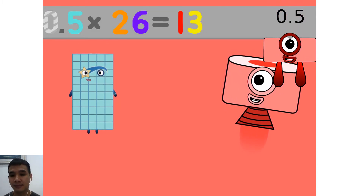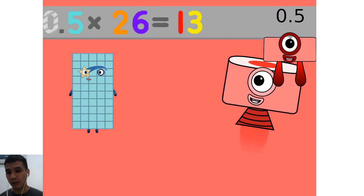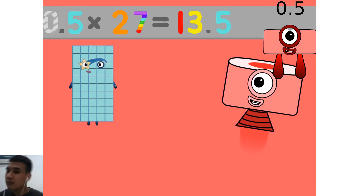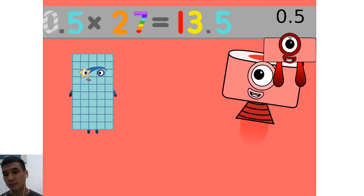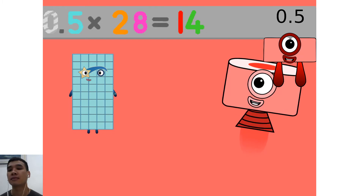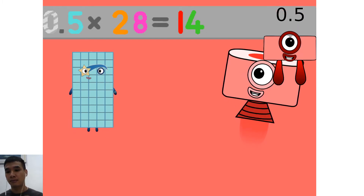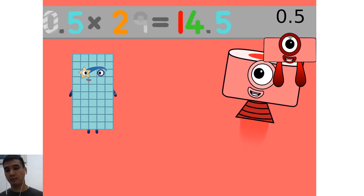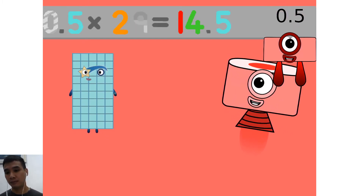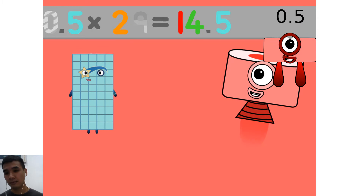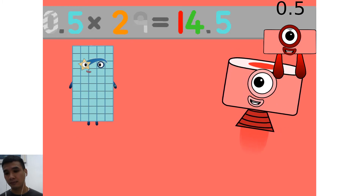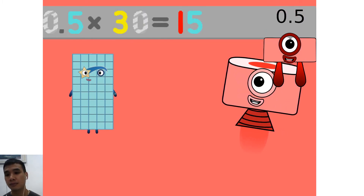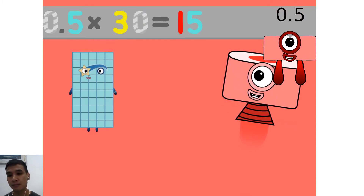0.5 times 26 equals 13. 0.5 times 27 equals 13.5. 0.5 times 28 equals 14. 0.5 times 29 equals 14.5. 0.5 times 30 equals 15.